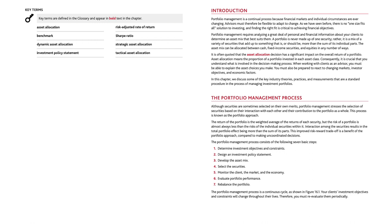The Portfolio Management Process consists of the following seven basic steps: determine investment objectives and constraints; design an investment policy statement; develop the asset mix; select the securities; monitor the client, the market, and the economy; evaluate portfolio performance; and rebalance the portfolio.